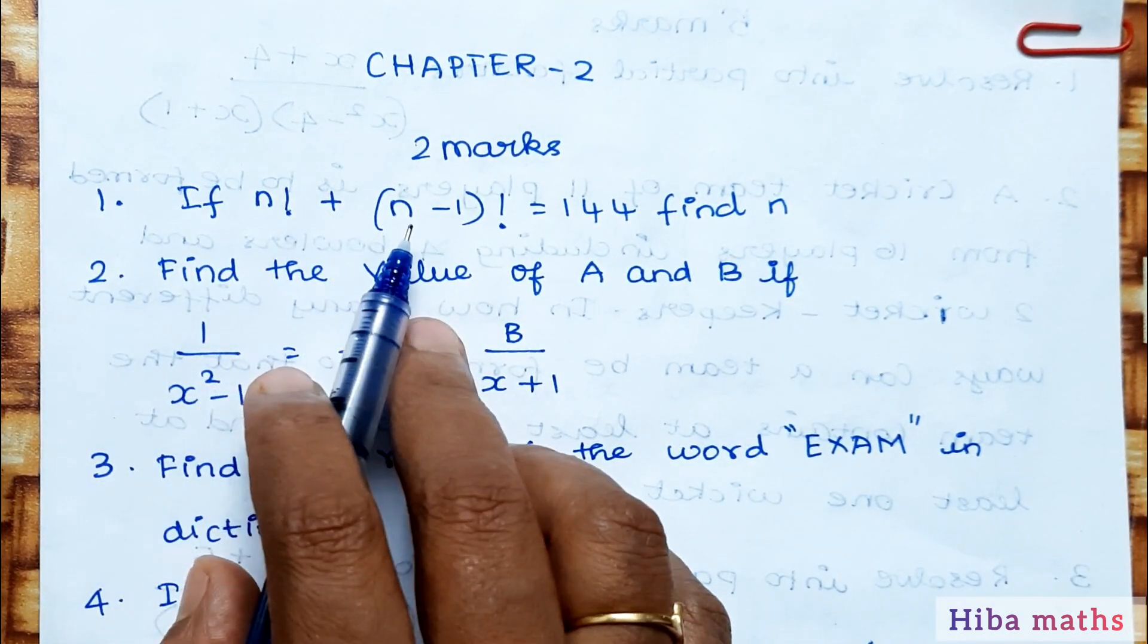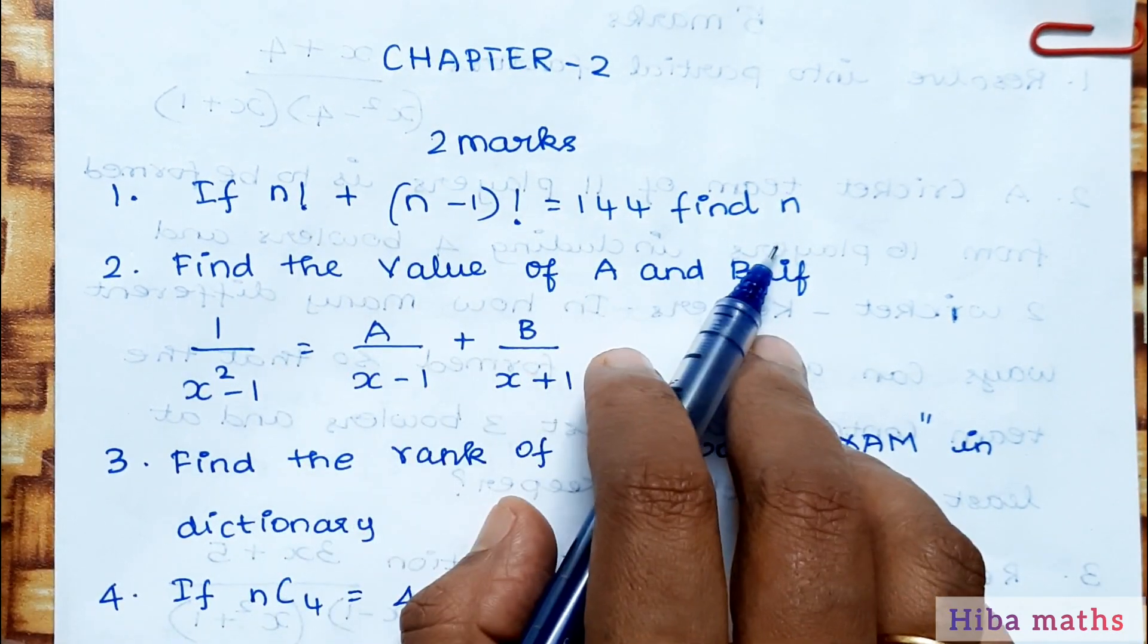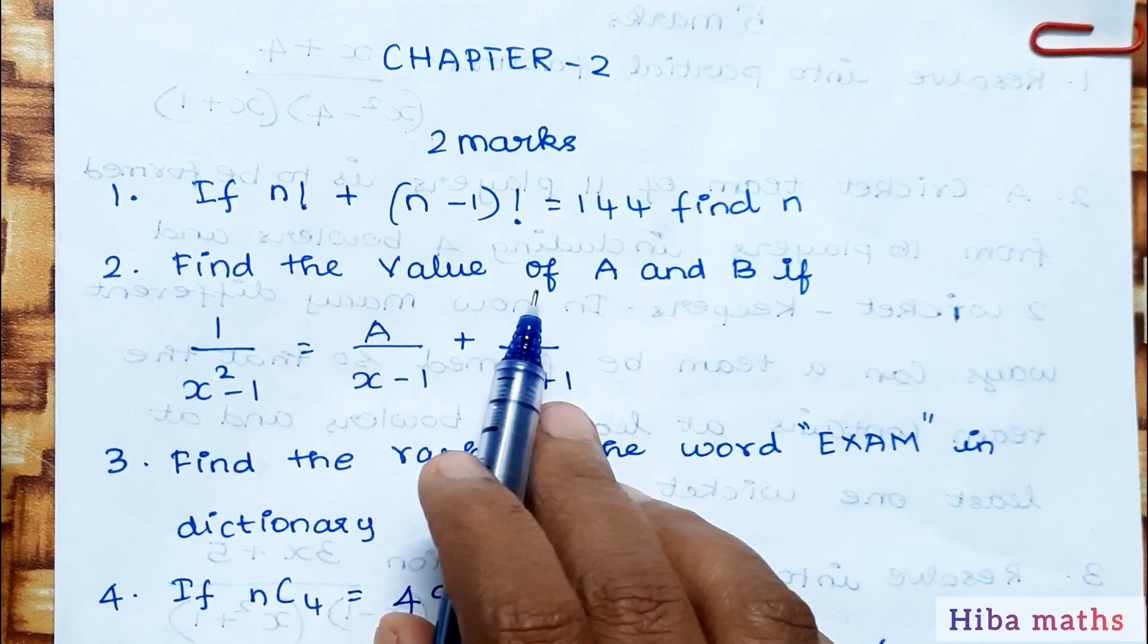If n factorial plus (n-1) factorial is equal to 144, then find n.